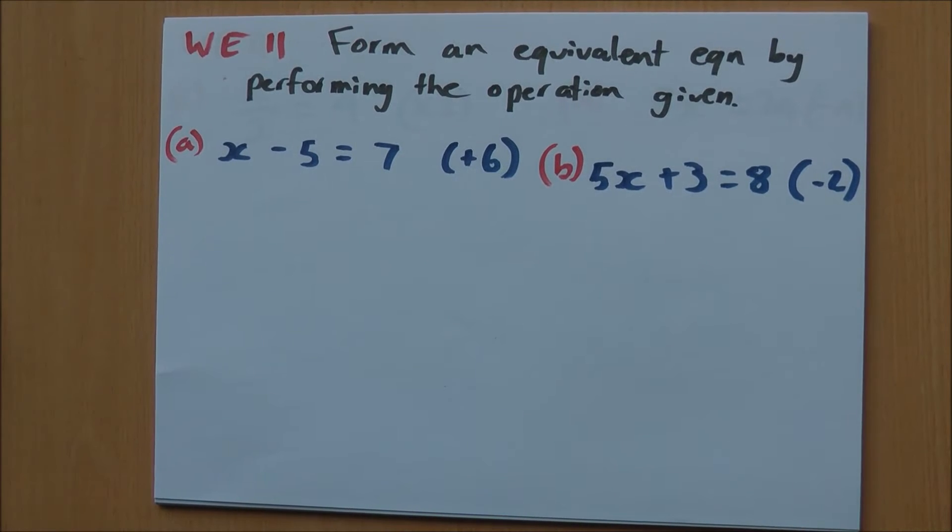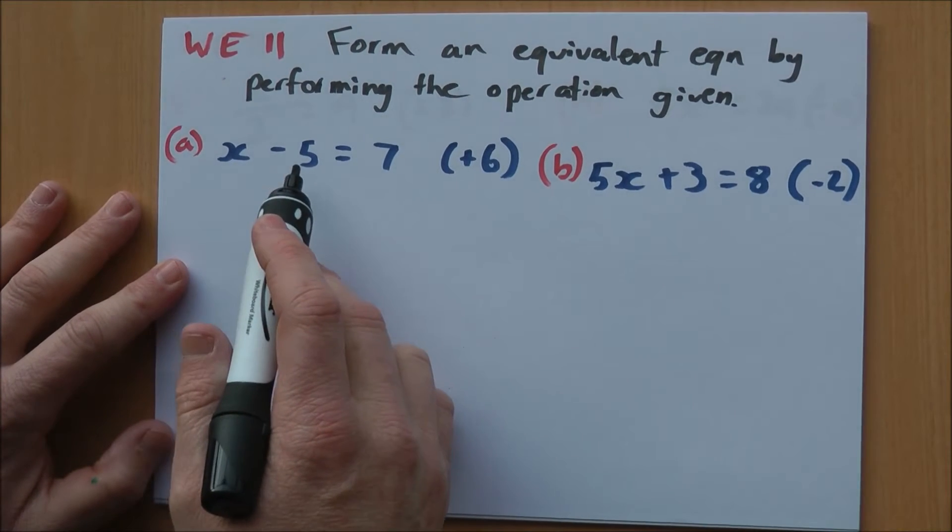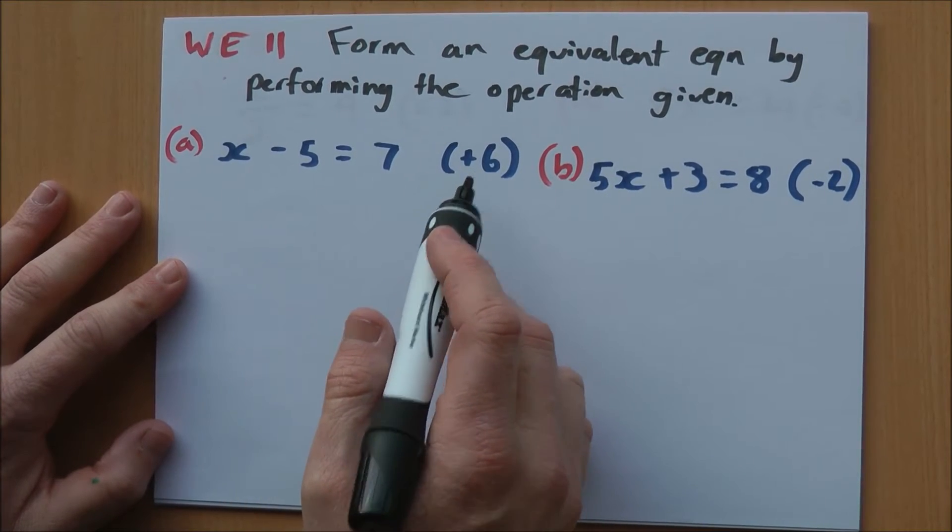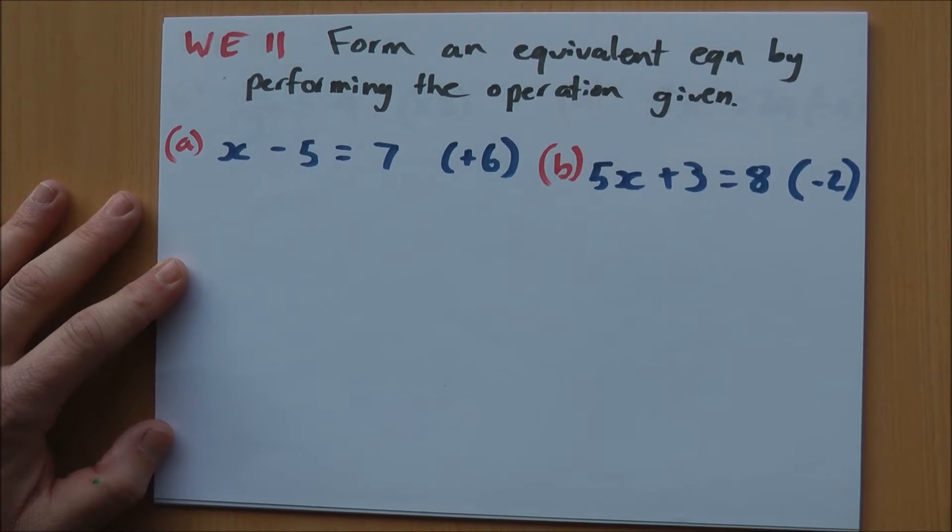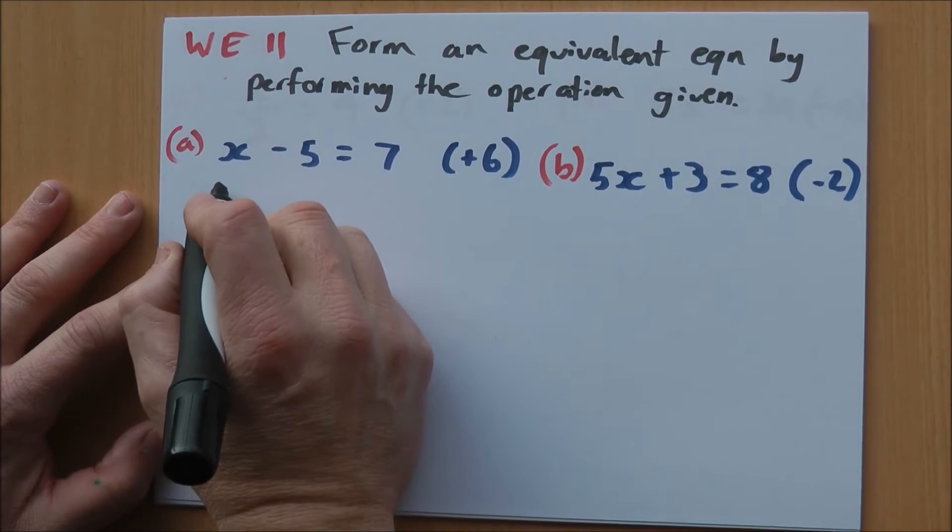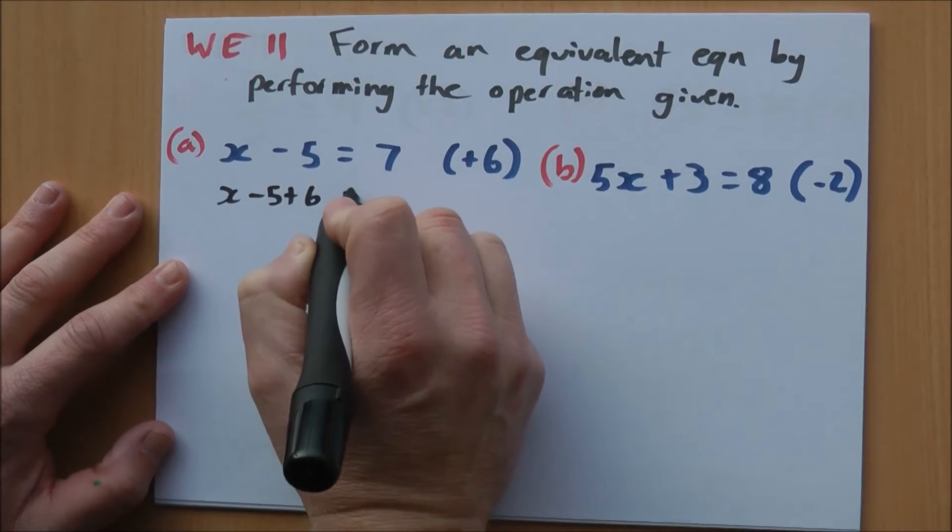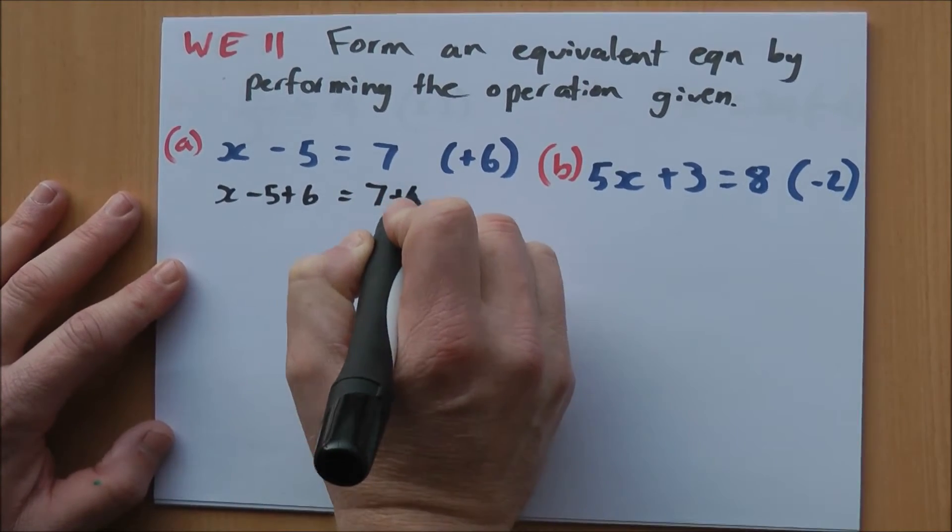Worked example 11. Form an equivalent equation to each of the following by performing the operation given in brackets to both sides of the equation. In part A, we have x minus 5 equals 7, and I want to add 6. I'm using the balanced method, so I want to do it to both sides. So I'm going to have x minus 5 plus 6 equals 7 plus 6.